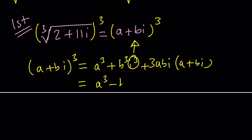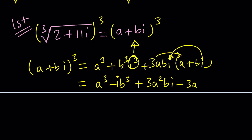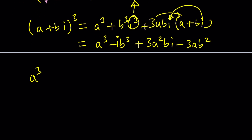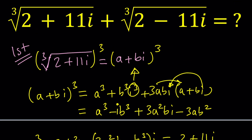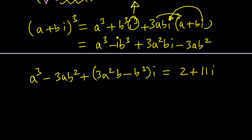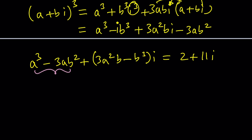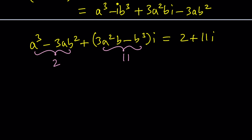Since i³ = −i, we can write b³i³ as −ib³. Distributing gives 3a²bi, and since i² = −1, we get −3ab². Grouping the real parts: a³ − 3ab², and the imaginary part: 3a²b − b³. This is supposed to equal 2 + 11i. So a³ − 3ab² = 2 and 3a²b − b³ = 11. Our goal is to find a and b so we can write a + bi, the cube root of (2 + 11i).